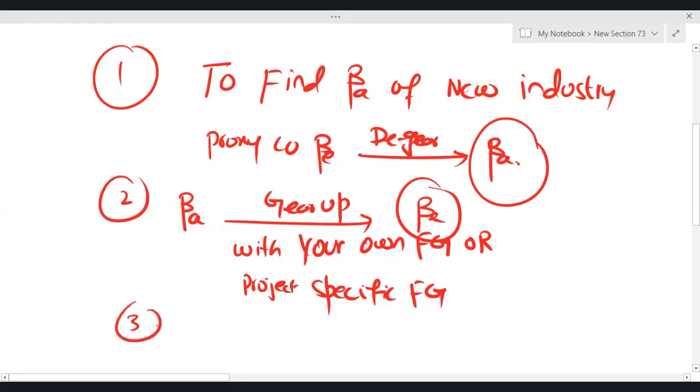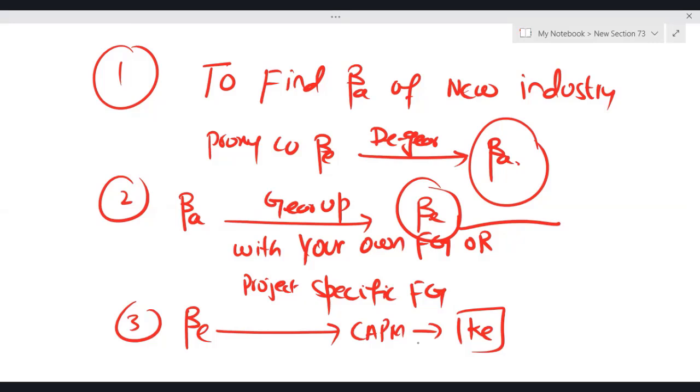Once you have found the beta equity, obviously then this beta equity, by using capital asset pricing model, CAPM, you can calculate KE. So quick, let me give you a revision of how to calculate risk adjusted WAC.